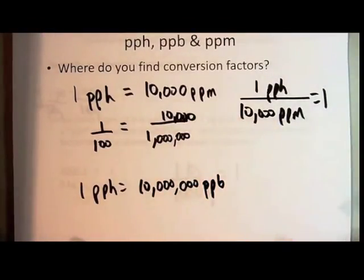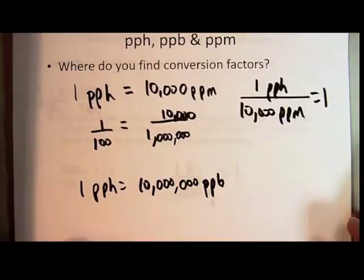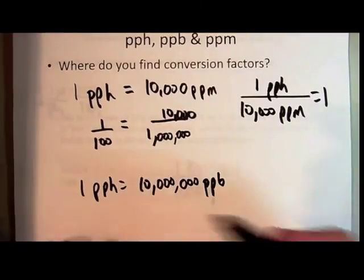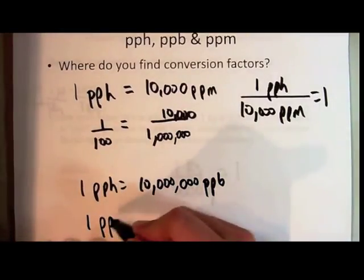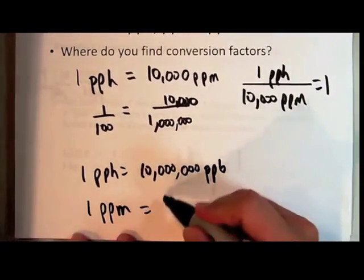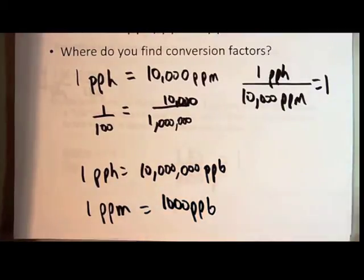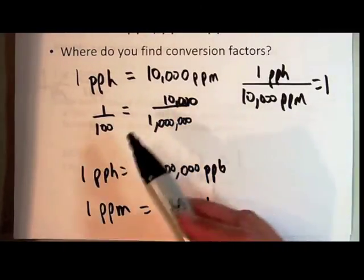One part per 100 is the same as 10 million parts per billion. You could make a similar type of conversion or unit factor for parts per 100 to parts per billion. What about the relationship between parts per million and parts per billion? Well, one part per million is the same as 1,000 parts per billion. And you can do the math like I did up here to see that the ratios are the same.